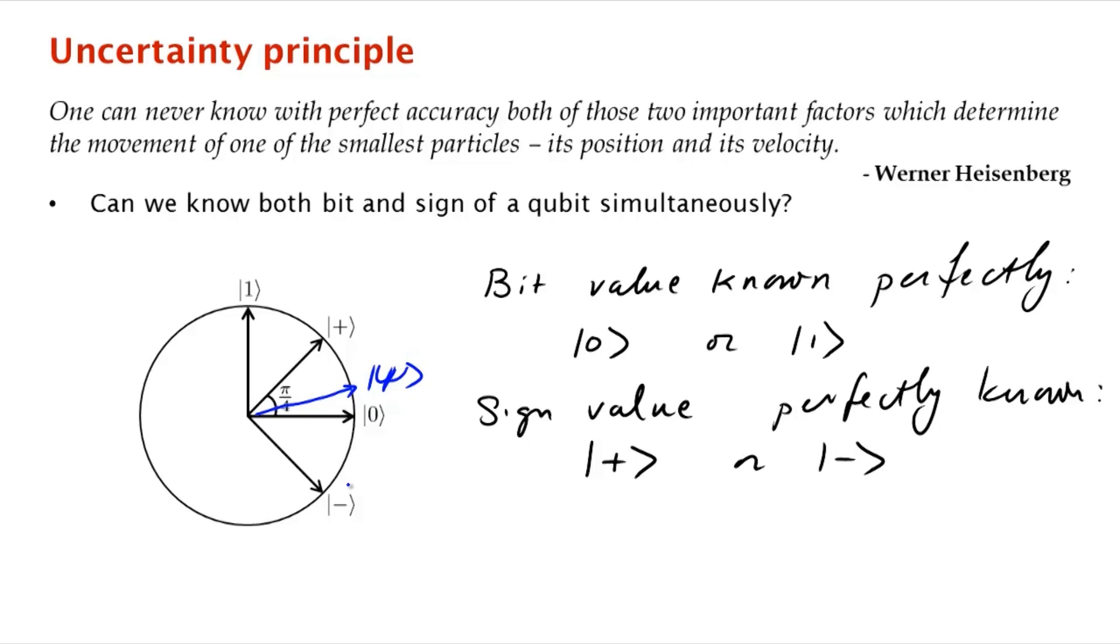So what's the case for position and velocity or momentum? Exactly the same thing, except you're working in a much more complicated vector space. So working with qubits allows you to understand the principle in a much simpler setting.